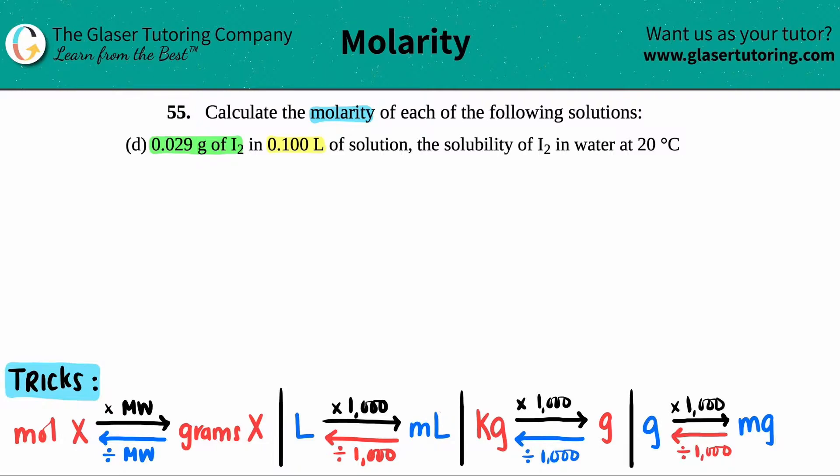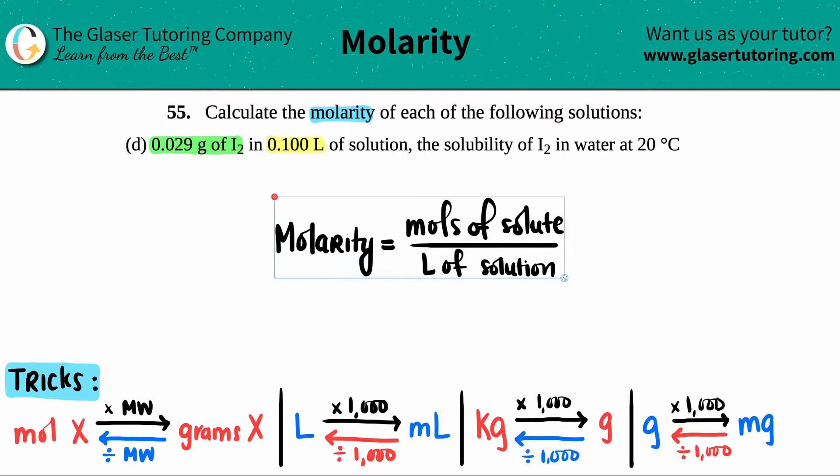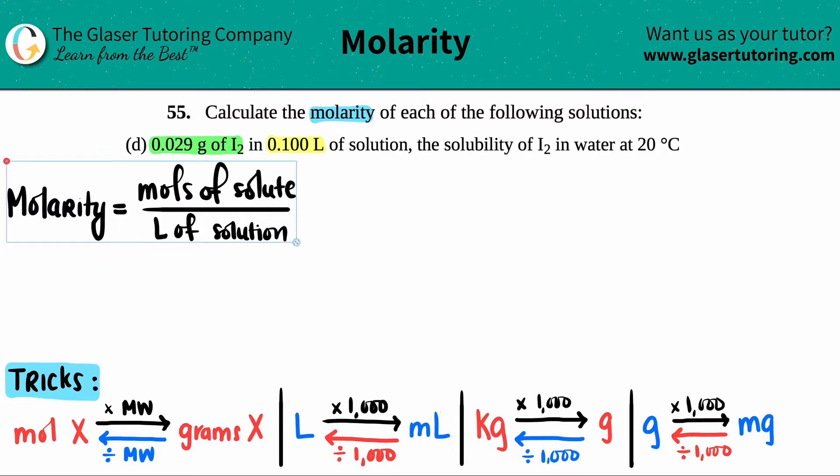The formula for molarity, especially if we're given a quantity and volume, is molarity equals moles of solute divided by liters of solution. More simply, capital M for molarity equals moles divided by liters.